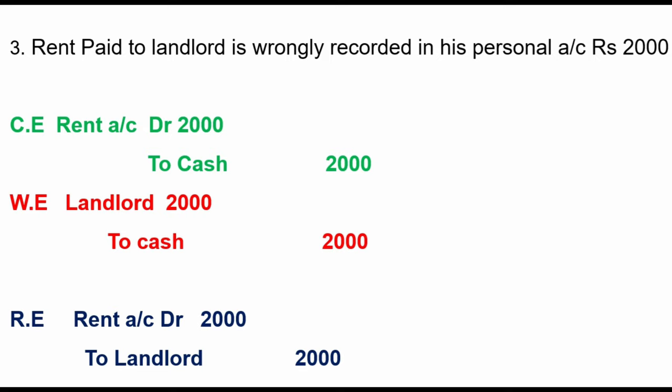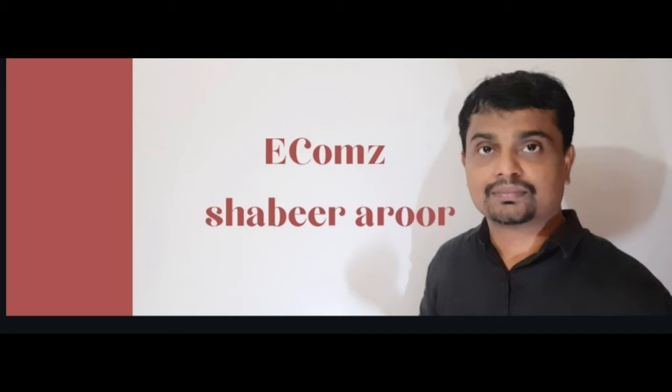This is the simple mechanism for rectification of two-sided errors: first write the correct entry, then the wrong entry, and by comparing these two entries you will get the rectification entry. Thanks for watching — keep learning, bye.